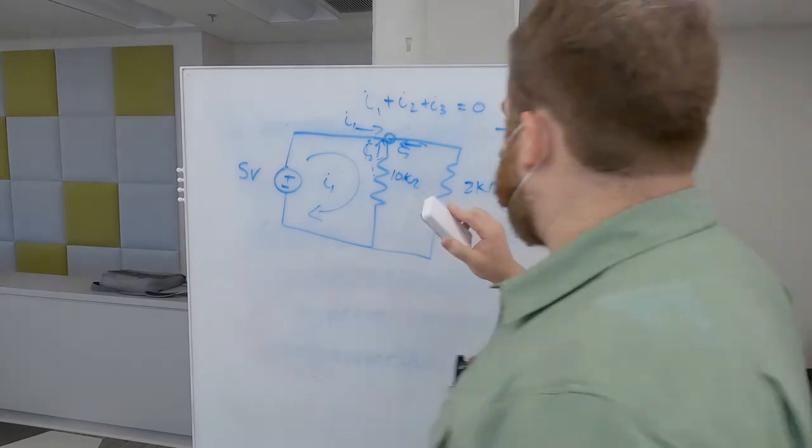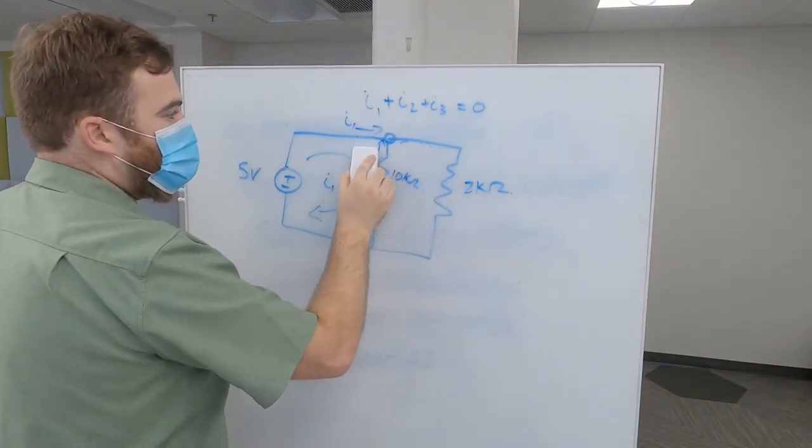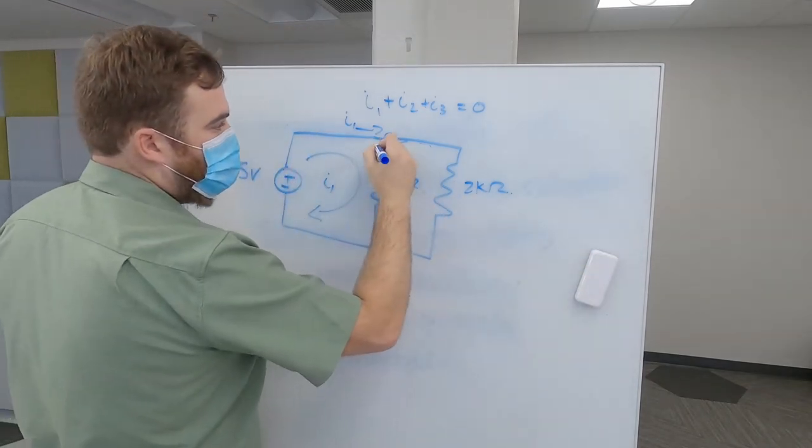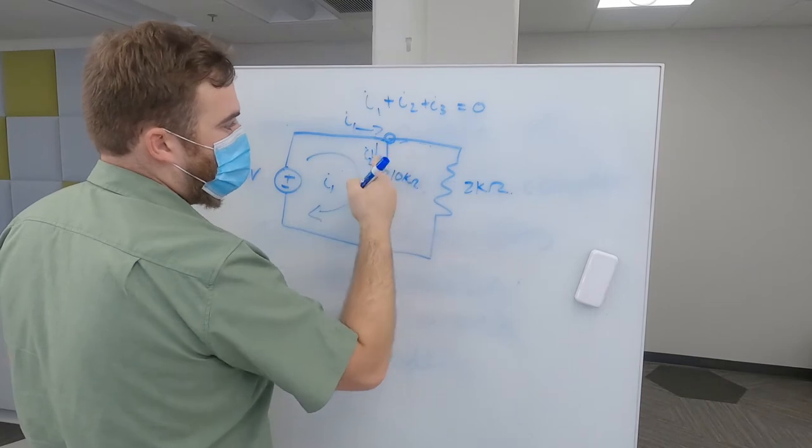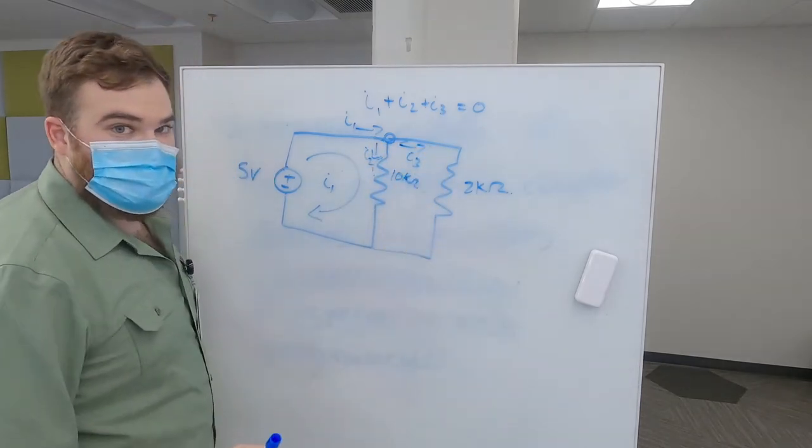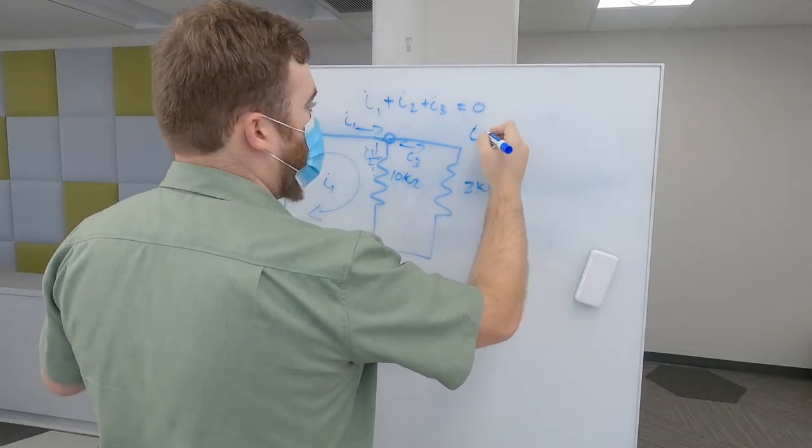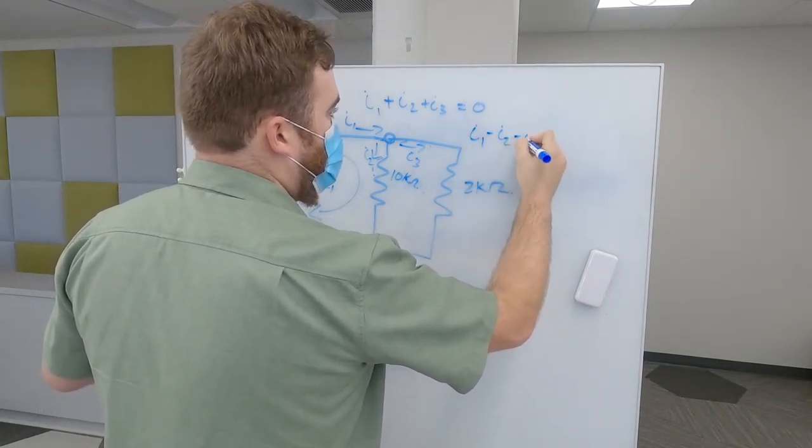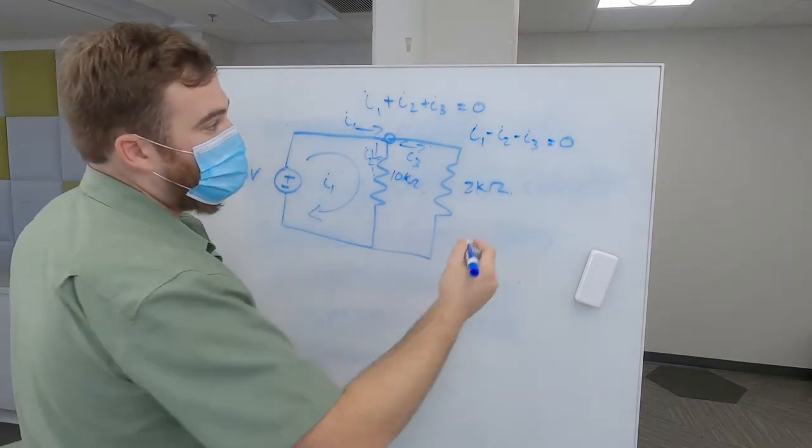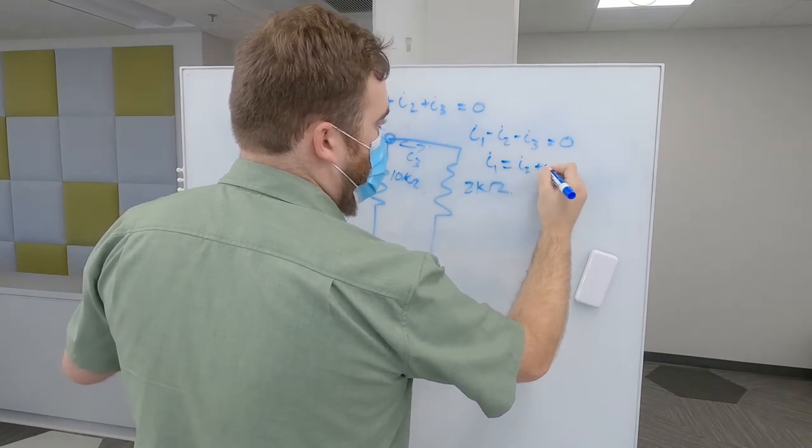So, in this specific case, we can usually tell, or we can tell in this case, that I2 is going to go this way down, and I3 is going to go that way. So then we can say I1 minus I2 minus I3 equals zero. And from there, we can simplify that to I1 equals I2 plus I3.